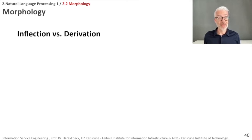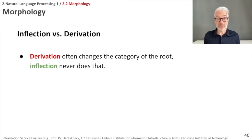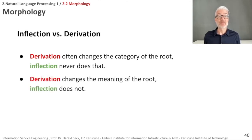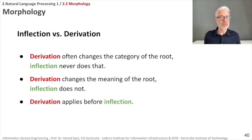Since both inflection and derivation are expressed via adding affixes, they can be difficult to distinguish. However, there are rules. Derivation often changes the word category of the root, while inflection never changes the word category. Derivation completely changes the meaning of the root — for example, adding 'un' in front of an adjective negates it entirely. Derivation is also usually applied before inflection.